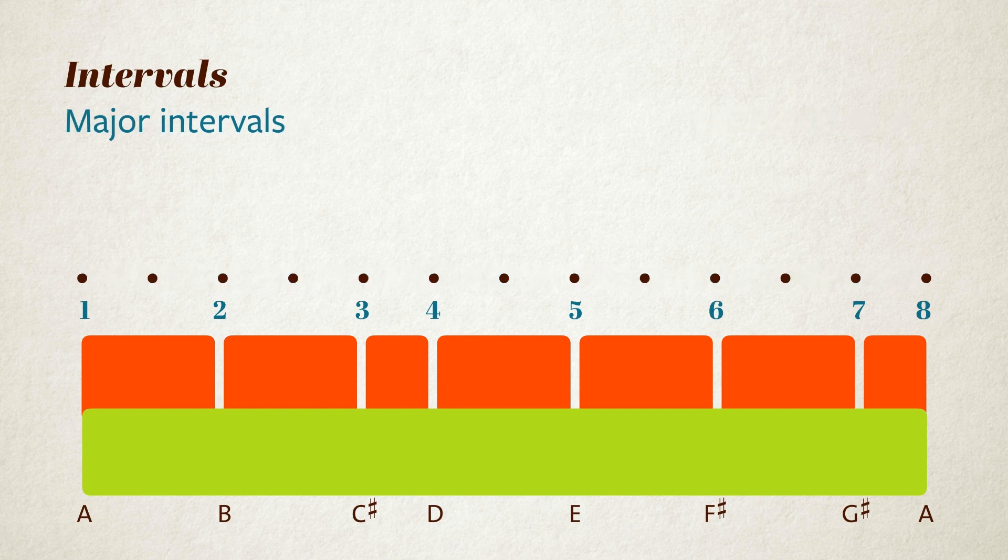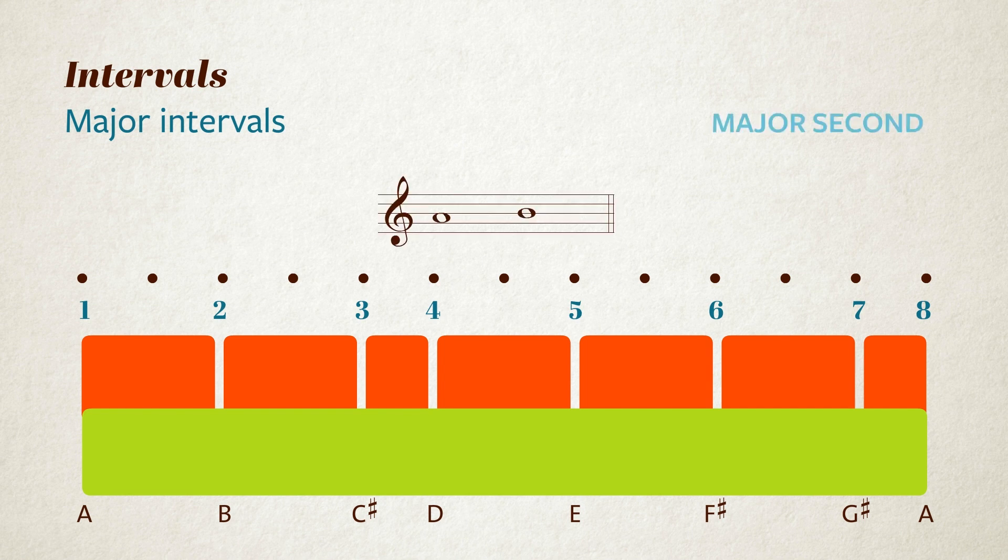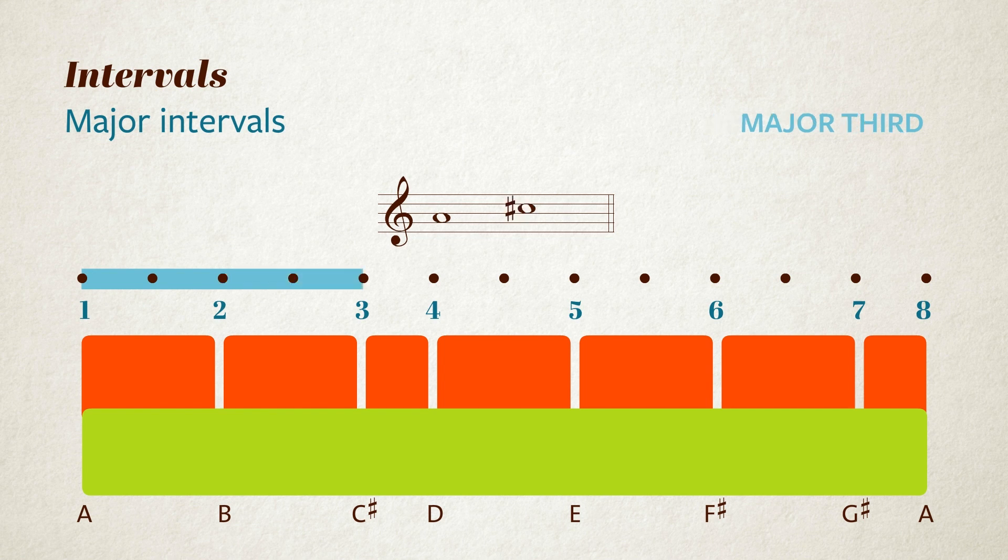Now, sticking with the major scale, all the other intervals measured from the first note are so-called major intervals. A to B is a major second, that's two semitones high. A to C sharp is a major third, which is four semitones. A to F sharp is a major sixth, nine semitones apart. And A up to G sharp is a major seventh, at eleven semitones.